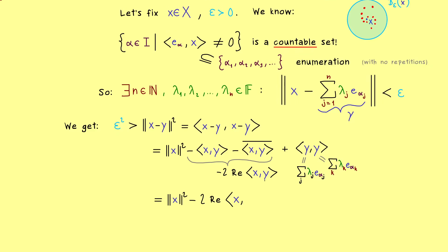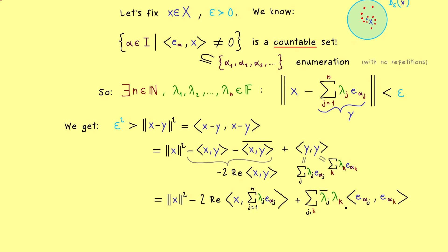In the middle term we also substitute y. In the third term we have a double sum with index j and k. The first scalar inside the sum has a complex conjugation on it, and what remains in the inner product is just the ONS — so we can use the Kronecker delta. In other words, the double sum collapses to a single sum.